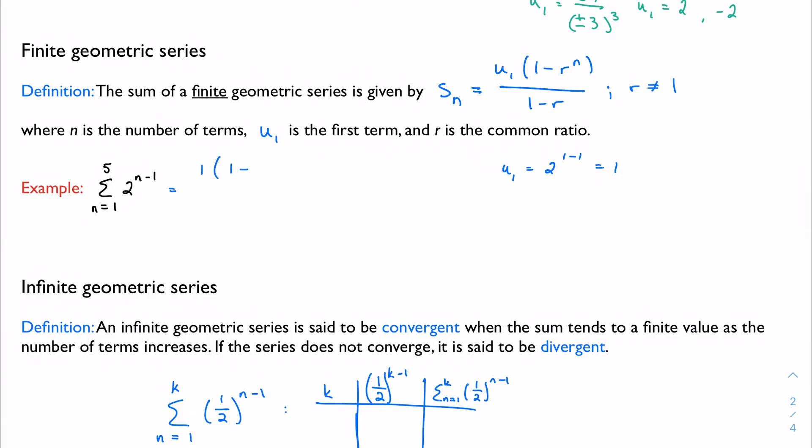1 minus r to the n. My common ratio is 2 to the 5th, the sum of all 5 terms, over 1 minus 2. I'm going to get, let's see, 2 to the 5th is 32. So I have negative 31 over negative 1, and I get positive 31. And sure enough, if I wanted to add up and check all these terms, I could. And I promise you I would get 31. It's just plugging into the formula and evaluating.